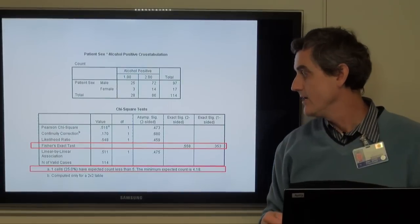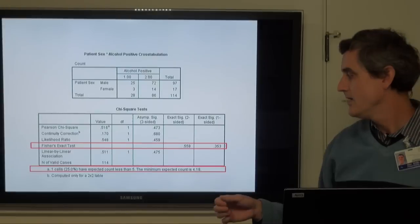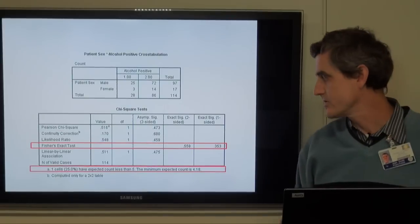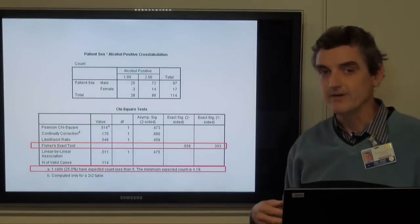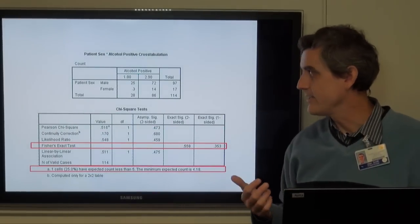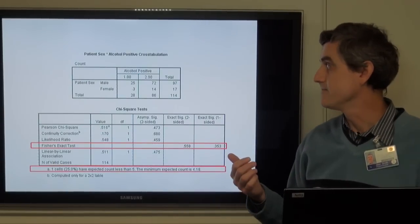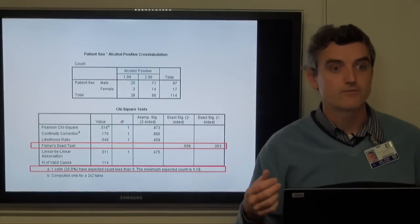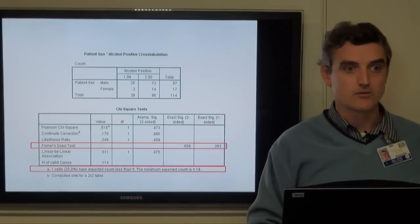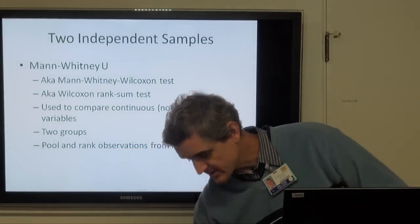SPSS will warn you at the bottom that one cell has an expected count less than five, meaning you should use the Fisher's Exact test. Looking at the exact significance — the two-sided p-value — in this case it's 0.558, which is not significant at all. So we do not reject the null hypothesis that the probability of testing positive for alcohol is different for men versus women who come in with injuries from a bicycle crash.